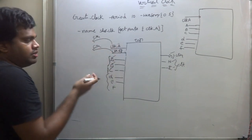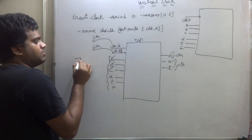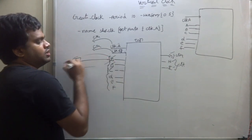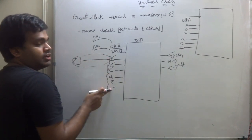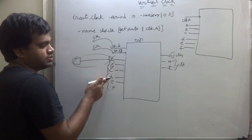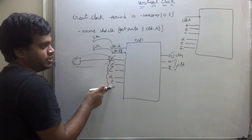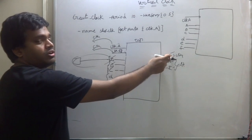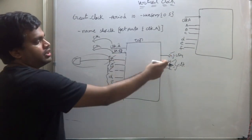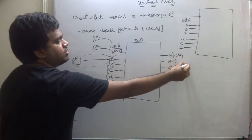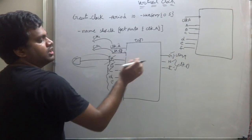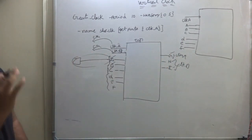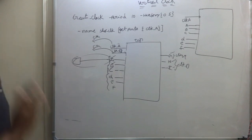Set_input_delay means you are telling how much delay there is from another block to this input. Similarly, D, E, F is working on clock B — so write set_input_delay for D, E, F. G is working on clock A — write set_output_delay for G. H, I is working on clock B — write set_output_delay with respect to clock B. Now coming to: what is virtual clock?